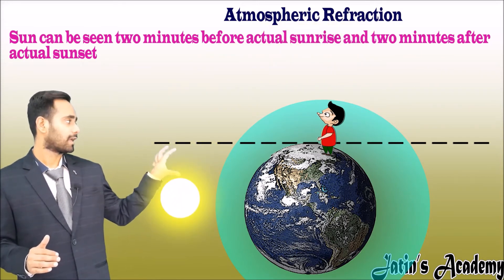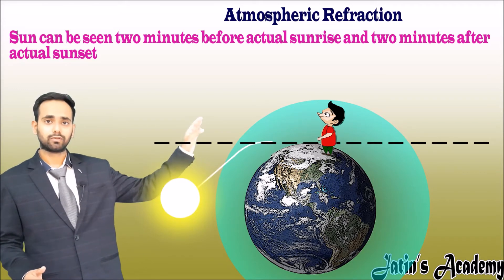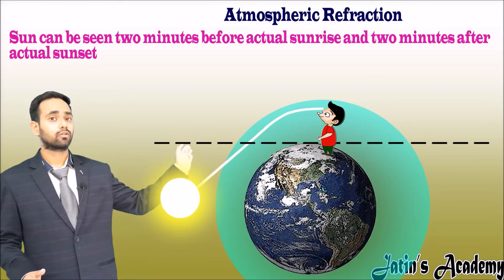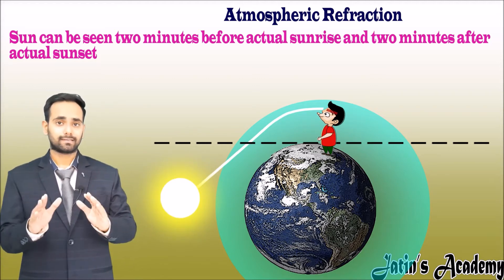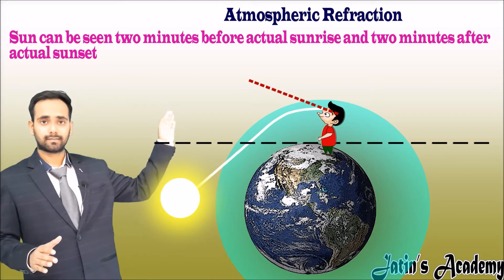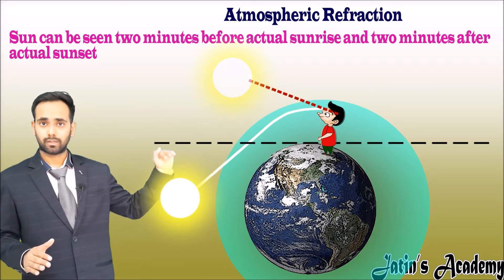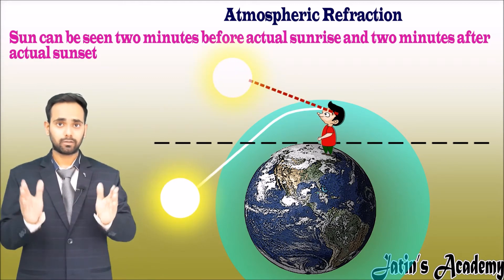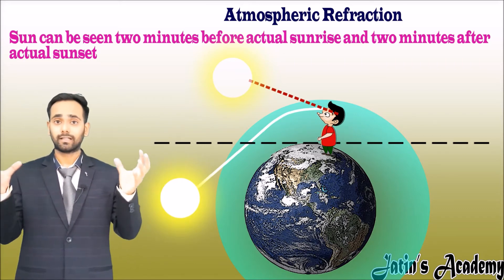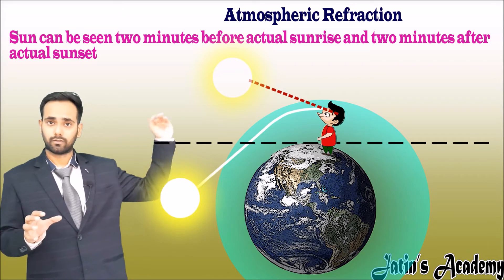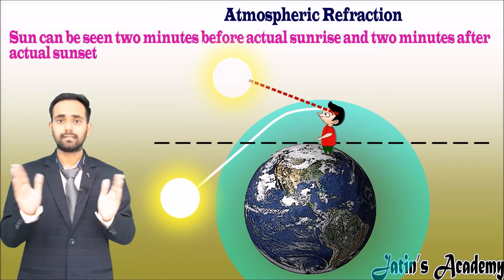Similarly, at sunset the Sun is already below the horizon, but light from the Sun moves from vacuum to atmosphere and bends towards the normal. Our eye sees straight, so when we extend this light ray we get the Sun appearing above the horizon. The Sun is actually below the horizon, but the person is able to see it because the refracted image of the Sun is above the horizon, causing a two-minute delay in the apparent sunset.